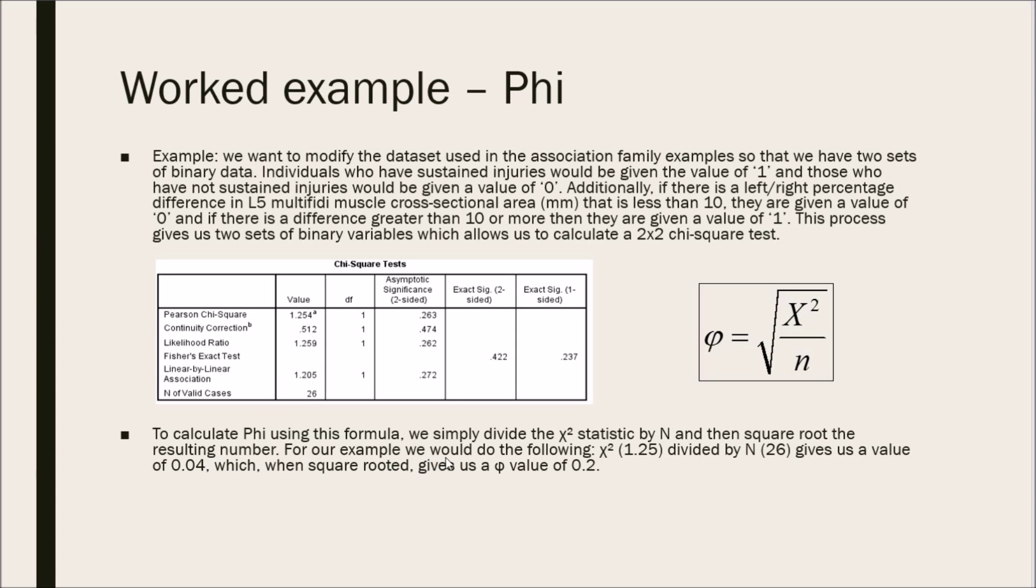And then square root the resulting number. For our example, we would do the following. Chi-square 1.25, I rounded it off, divided by n, 26 gives us a value of 0.04, which when square rooted gives us a Phi value of 0.2.